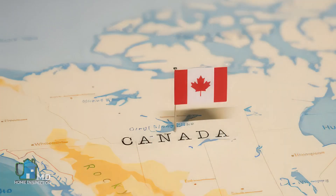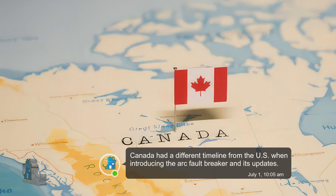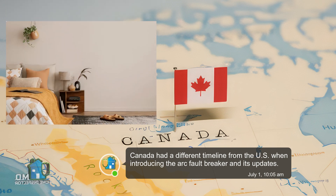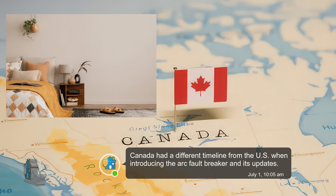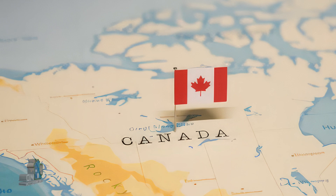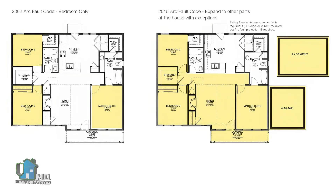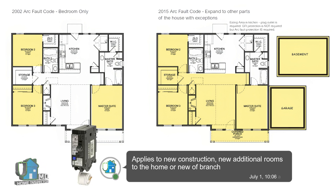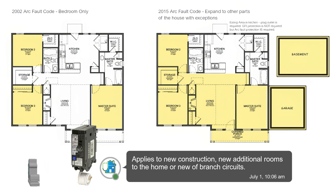Let's move on to a quick history of arc fault breakers in Canada. Arc fault breakers were first introduced in Canada in 2002, required only for new bedrooms. The next big change came in 2015 when improvements expanded their use to almost all parts of the house. This new arc fault breaker was renamed the combination arc fault breaker.